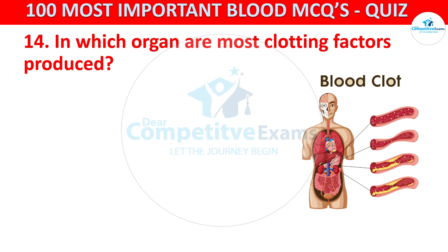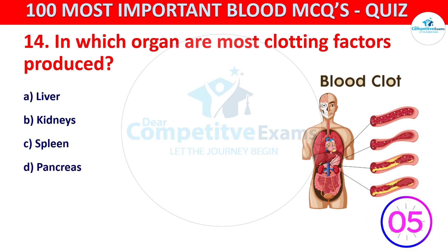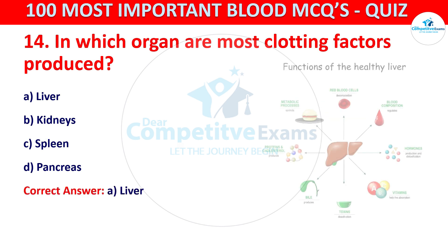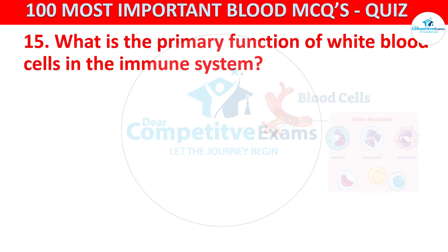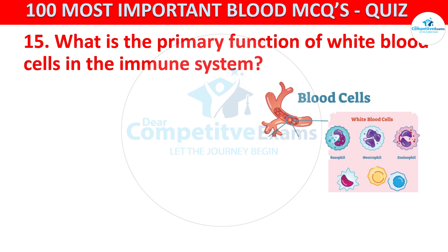Your options are liver, kidneys, spleen, or pancreas. The correct answer is A, that is liver. The liver synthesizes and releases most clotting factors essential for the coagulation process. Question number fifteen: what is the primary function of white blood cells (WBCs) in the immune system? Your options are phagocytosis, oxygen transport, clot formation, or hormone secretion.